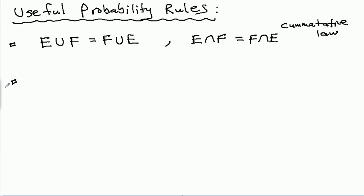Next, the associative law says that the union of E or F, union G, is equal to the union of E with F union G. In other words, you can move these parentheses around and do these unions. If you have three events, you can do them in any order.